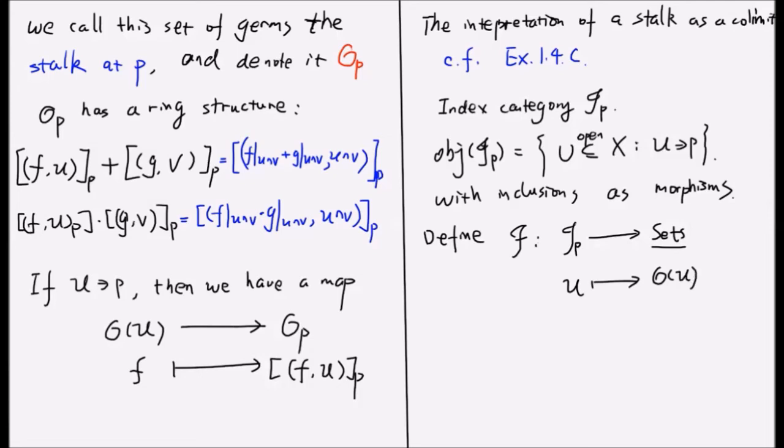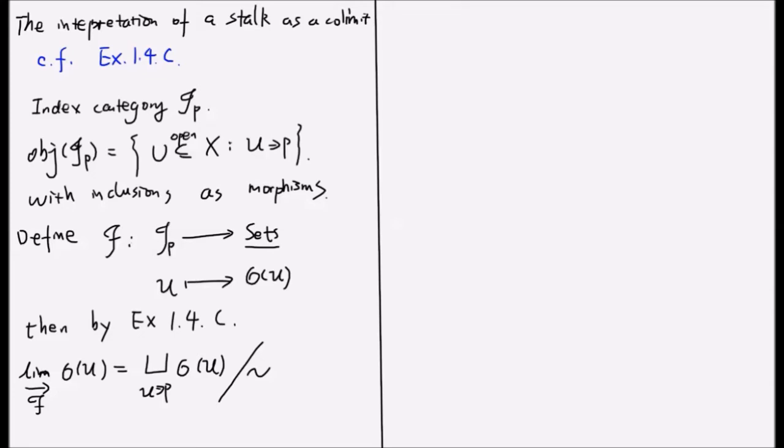Now, by exercise 1.4.c, we can see that the colimit of O(U) with respect to this functor will be the disjoint union of all O(U)'s and the equivalence relation given by the pair (f,U) equal to (g,V)